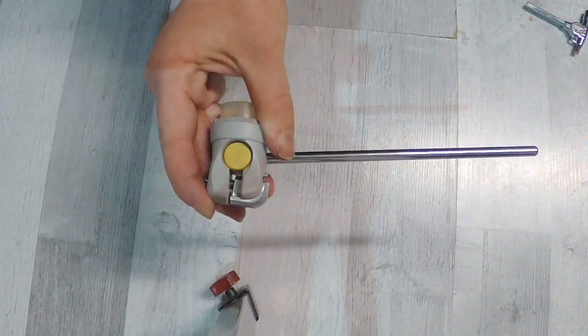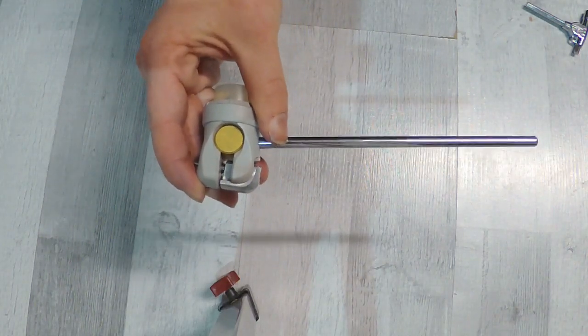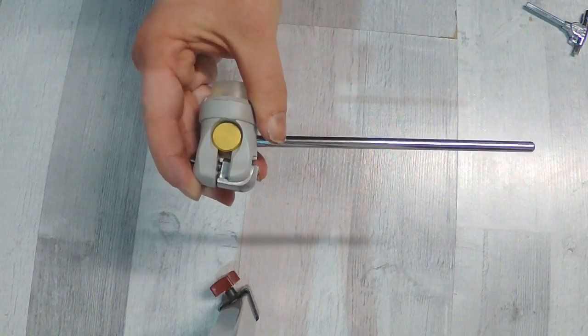How to change the head on the Tama SpeedCobra 910 beater.